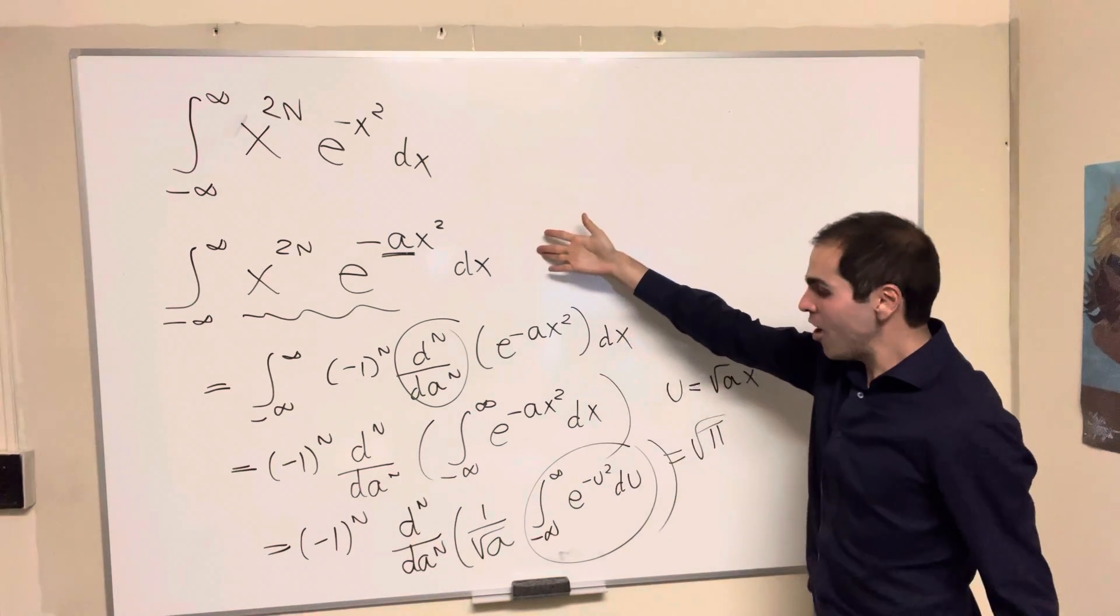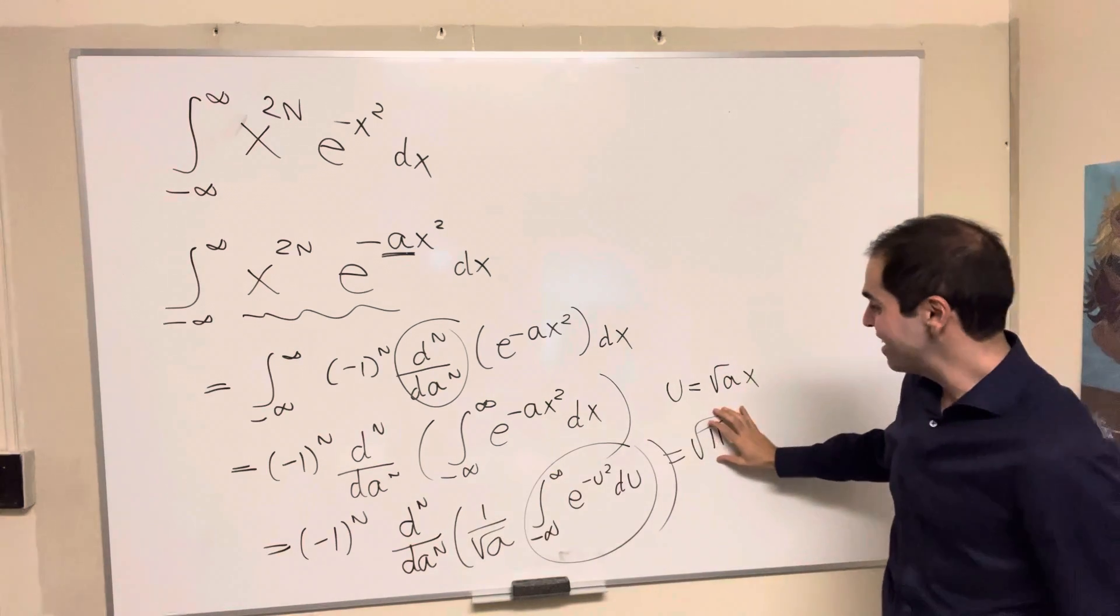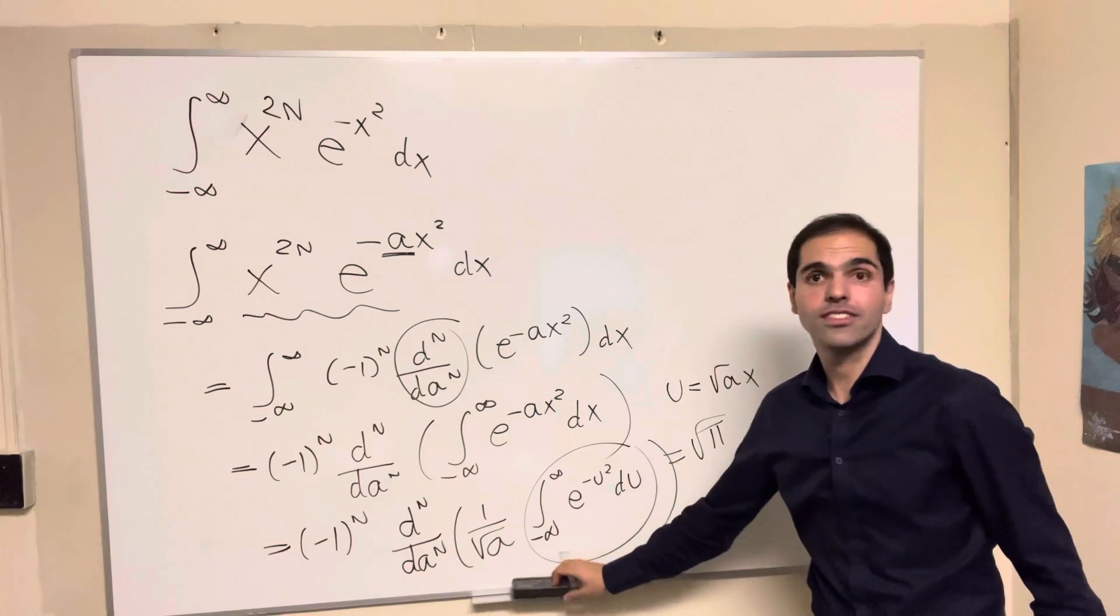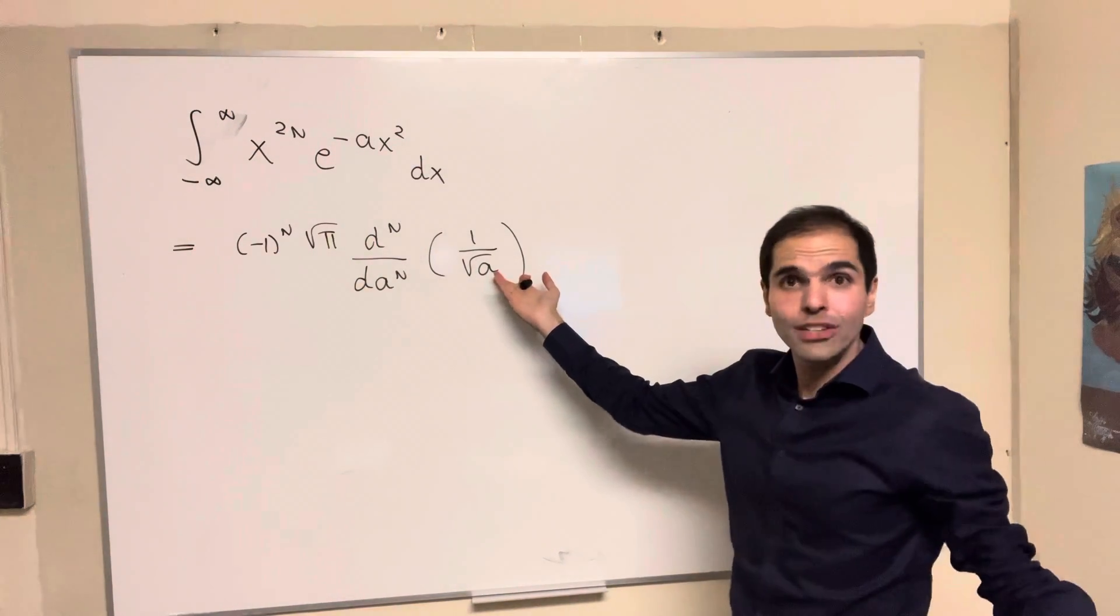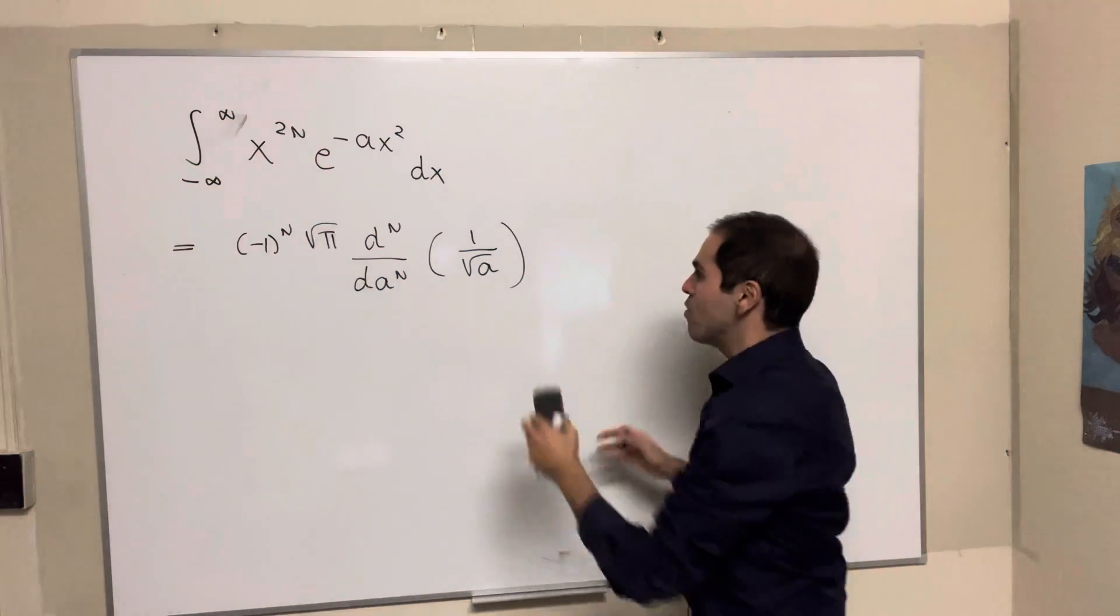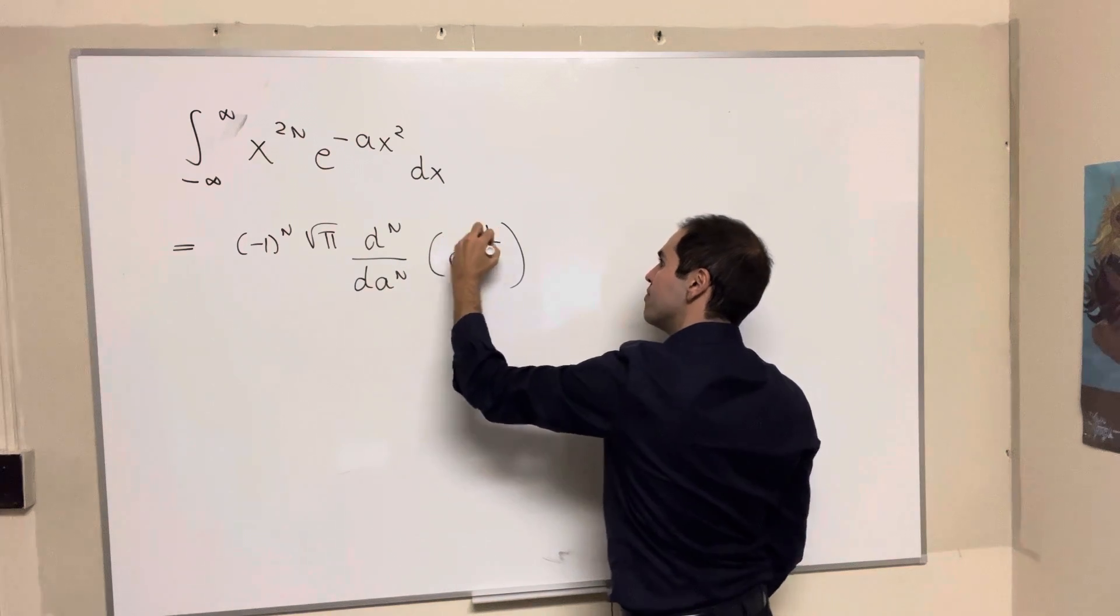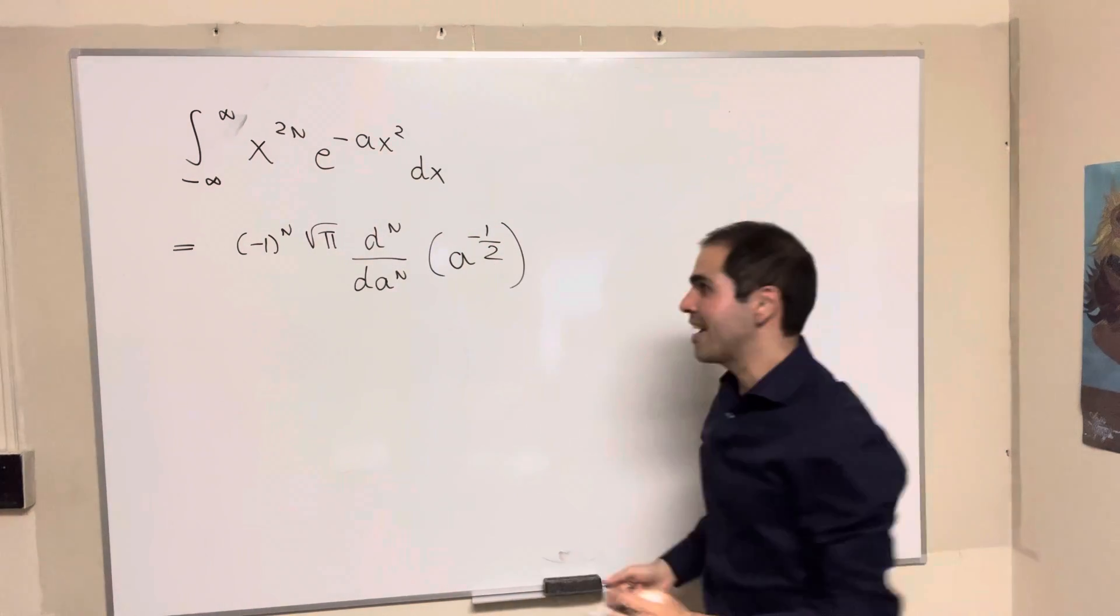So a delicious slice of square root of pi. So again, this complicated integral just becomes minus 1 to the n times square root of pi times the nth derivative of this square root of a, that is a to the minus 1 half.